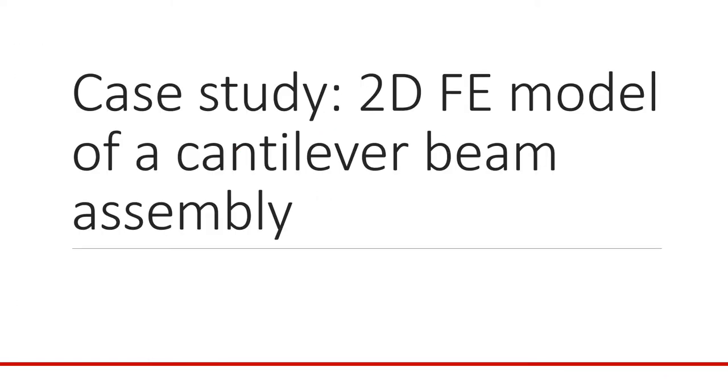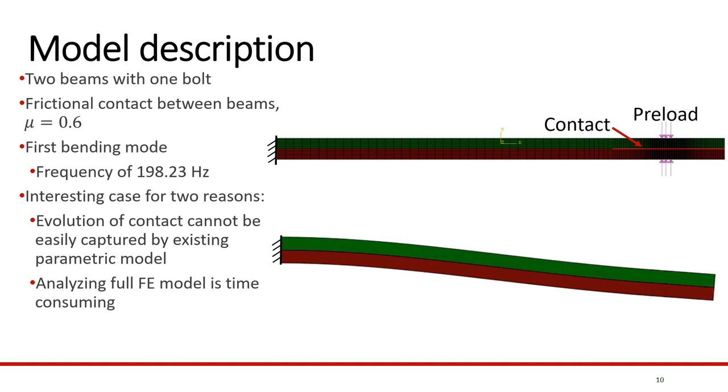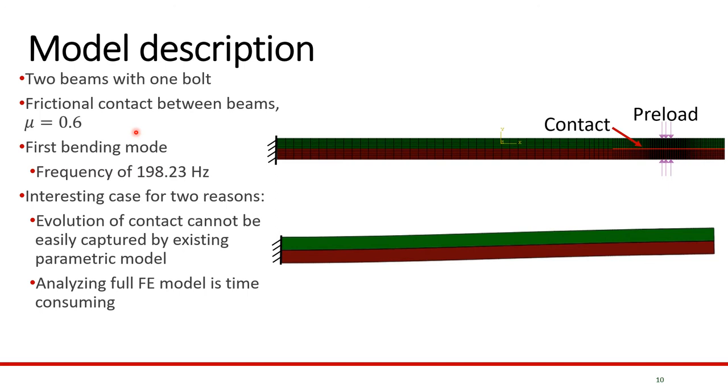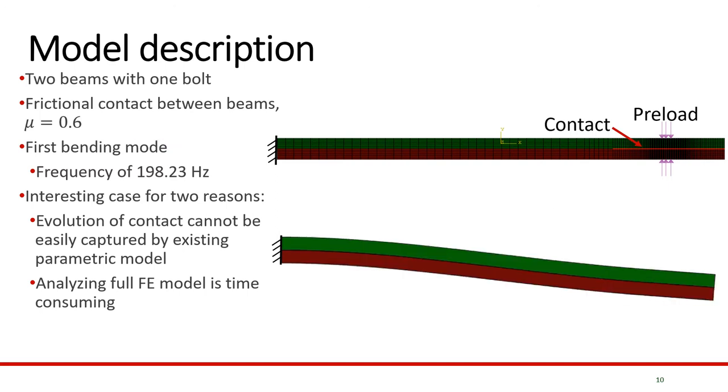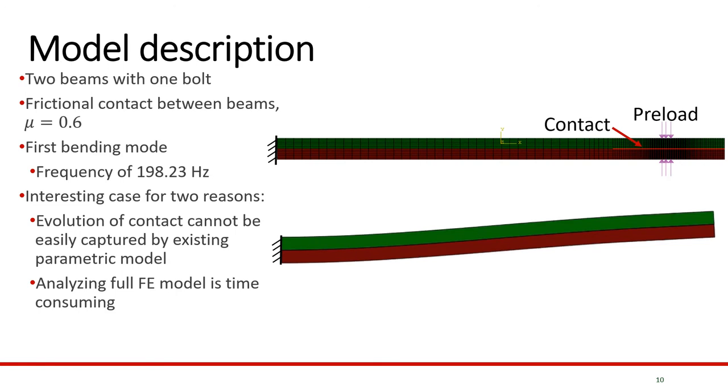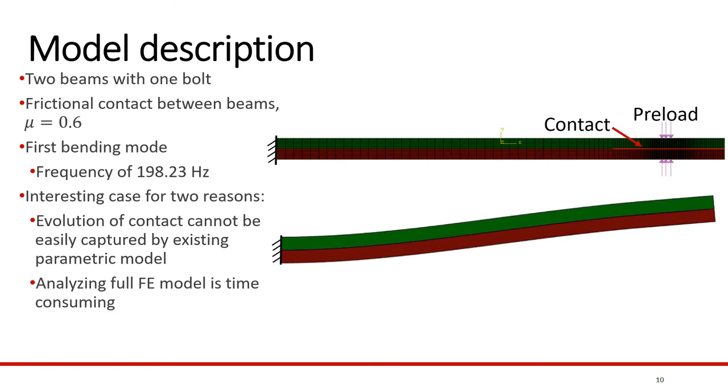We're going to look at a case study of a 2D finite element model of a cantilever beam assembly. This assembly consists of two beams that are bolted at one end and cantilevered on the other end. The friction contact between the two beams is modeled with mu equals 0.6. We are analyzing the first bending mode of the beam, which has a frequency of about 198 hertz. This case is interesting for two reasons. First, the evolution of contact cannot be easily captured by existing parametric models. Second, analyzing the full finite element model is very time consuming, thus warranting the need for a new approach.